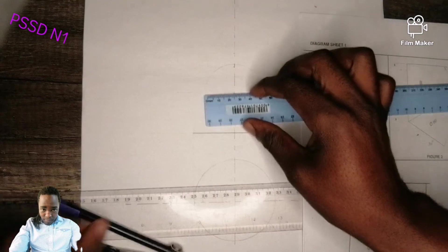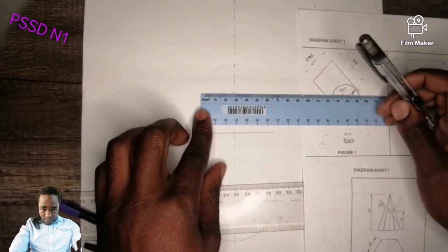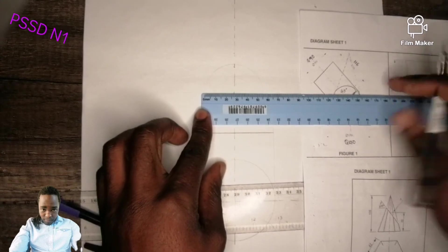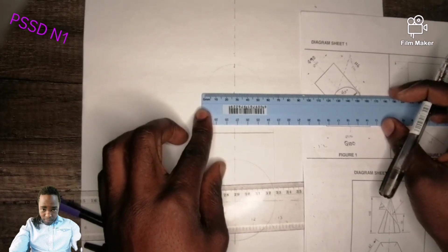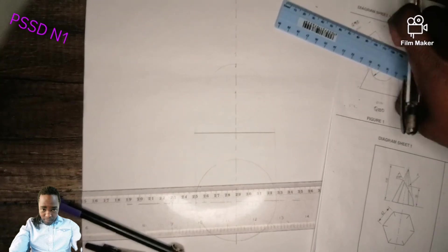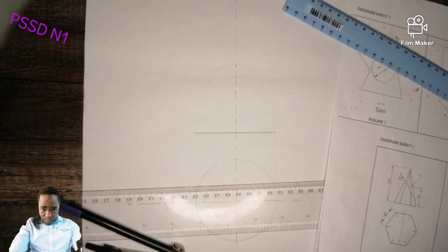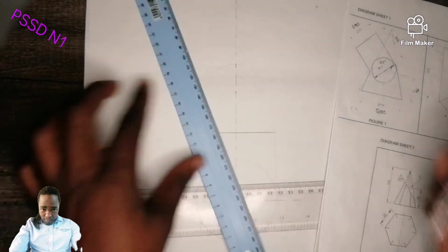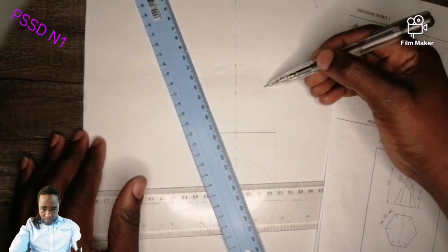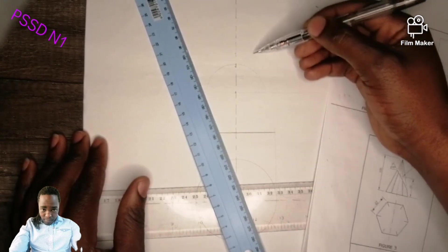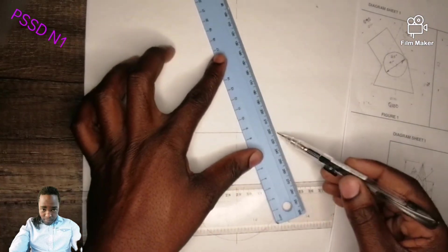From there, you take this point to the circumference of the side. You take this point to the circumference of the side. It must just touch like this.